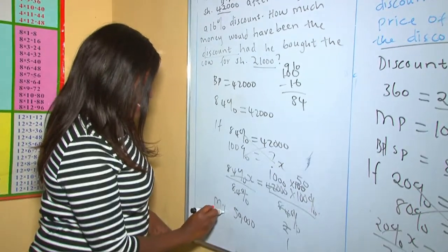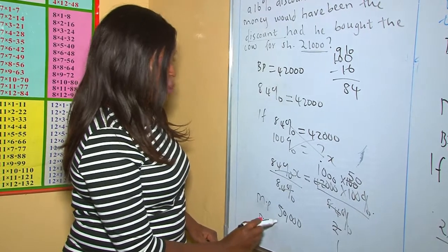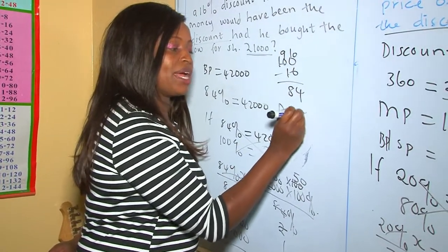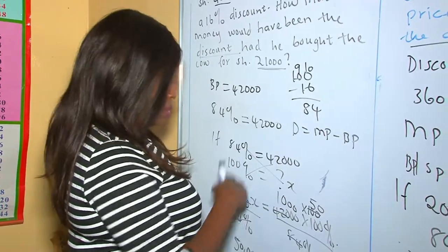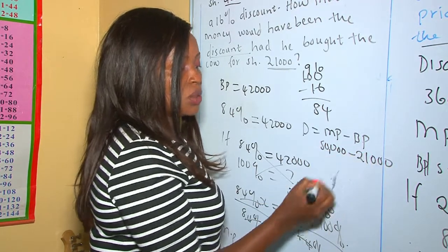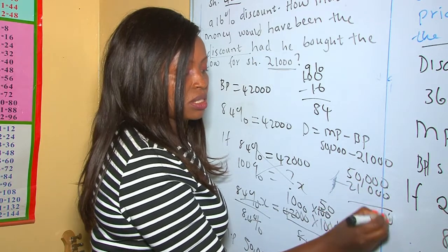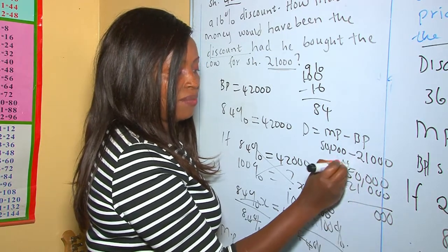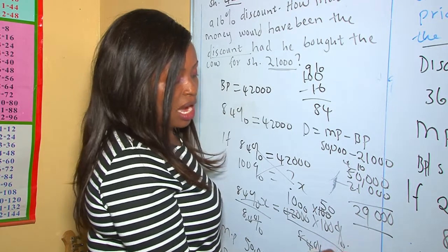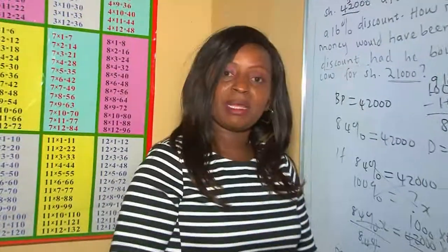Now, if the buying price is 21,000 shillings, what will the discount be? Discount = marked price − buying price = 50,000 − 21,000 = 29,000. Therefore the discount would have been 29,000 shillings.